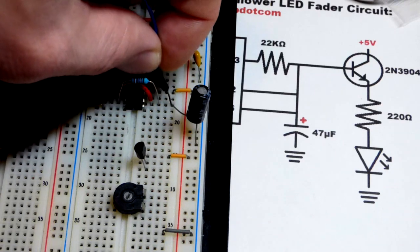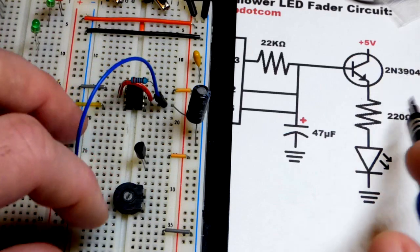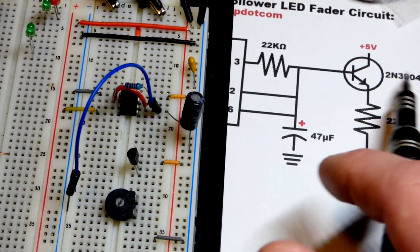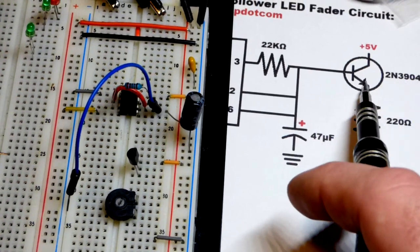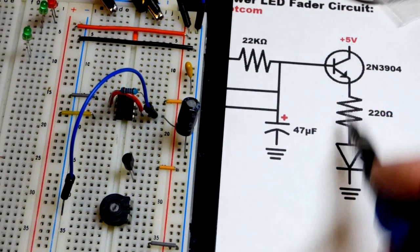Now for the signal which goes to the base, the base is the middle pin, we put the jumper there. By the way, you can use a different transistor if it starts with 2N and it's an NPN bipolar junction transistor.